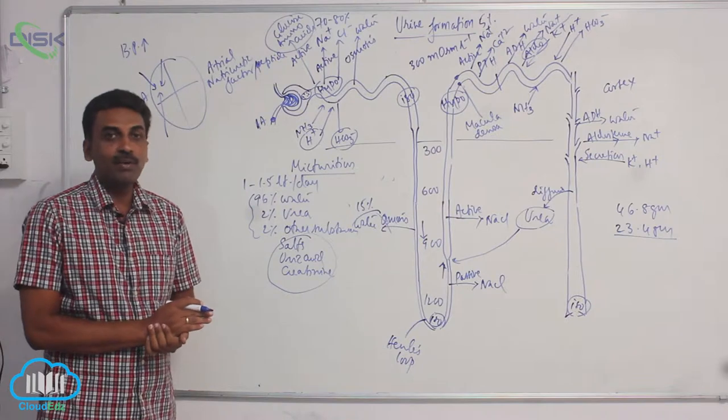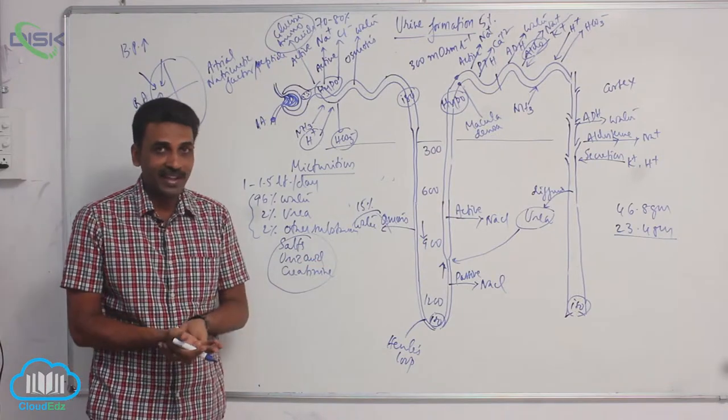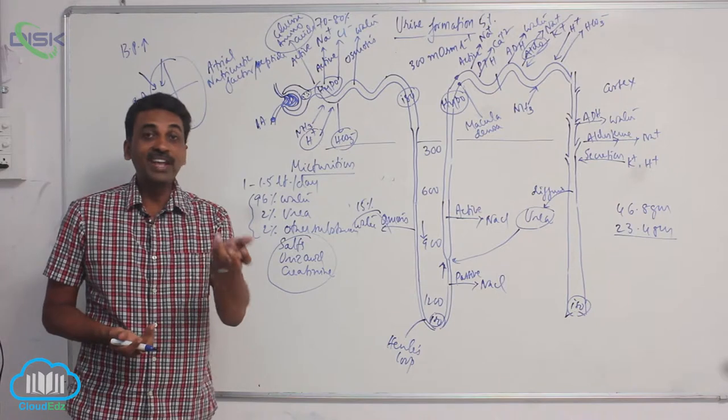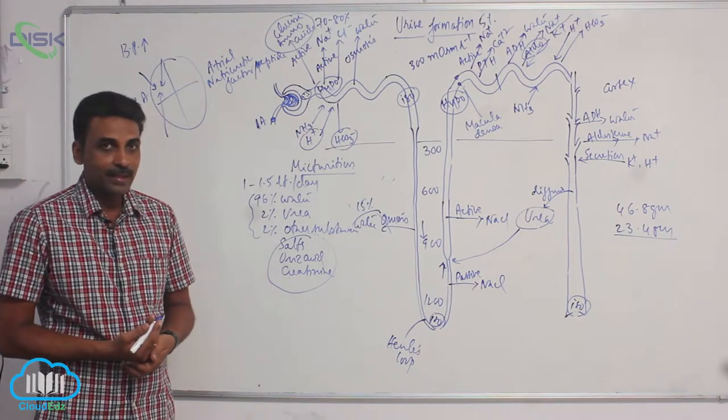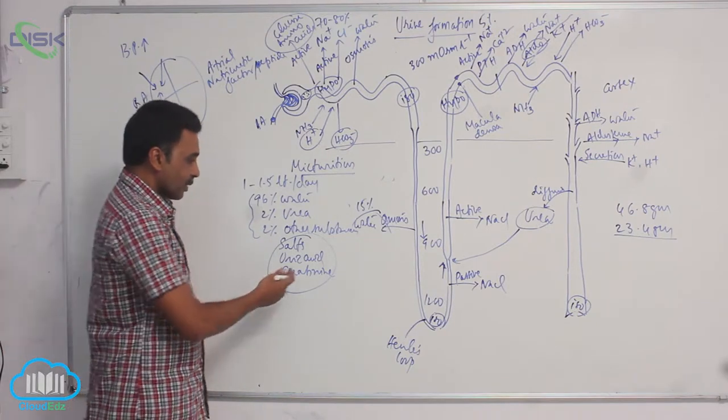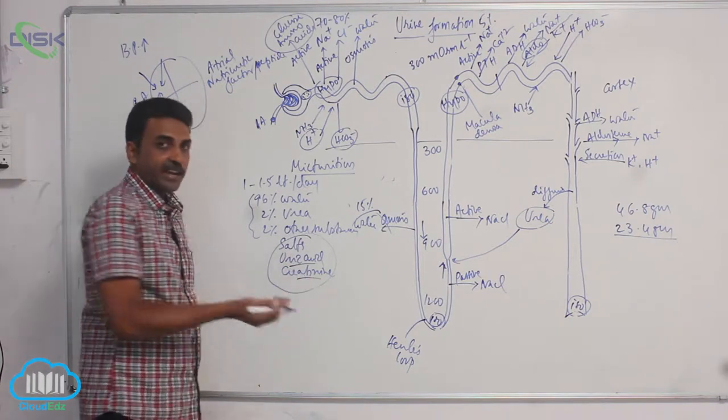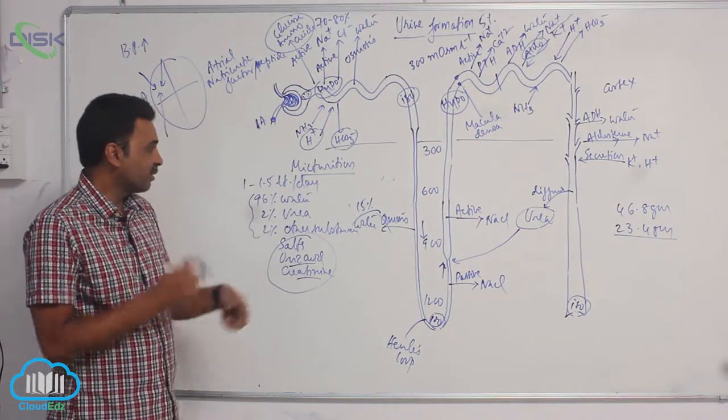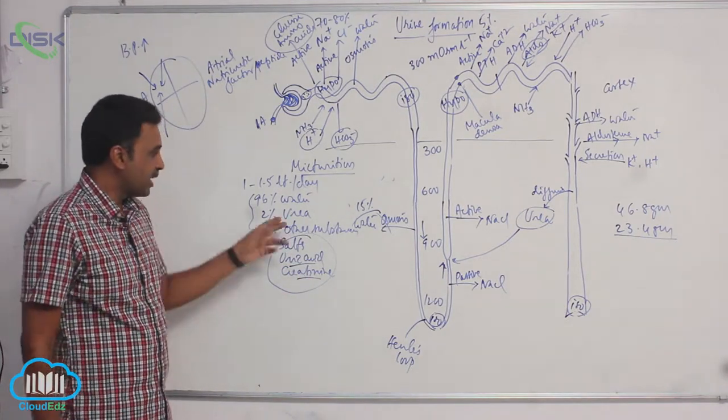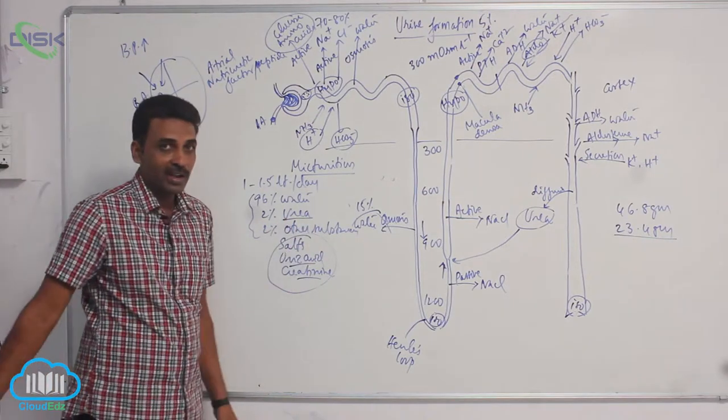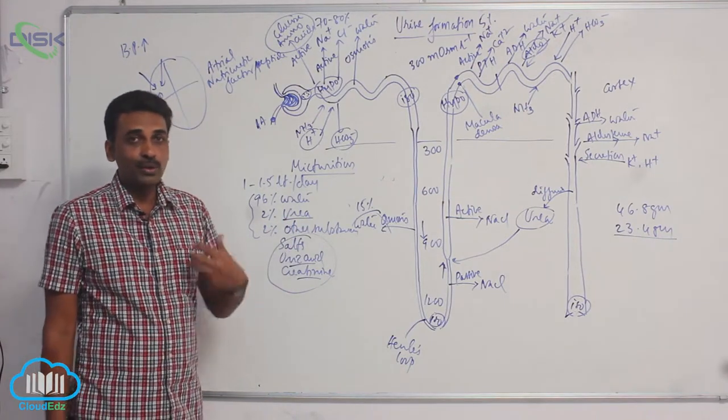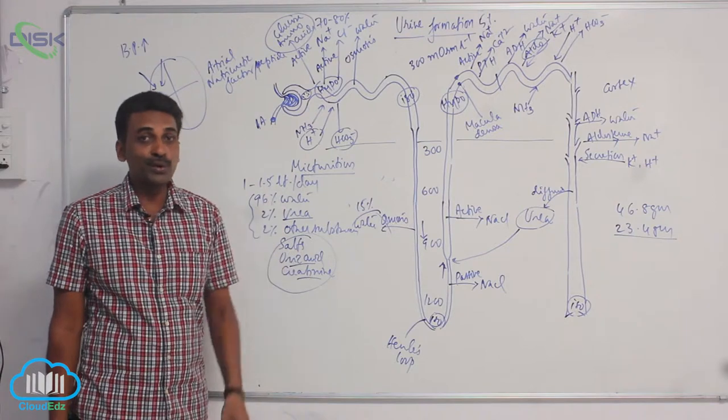Uric acid, one and a half to two grams per day. Creatinine, 1.8 grams per day. Uric acid, creatinine, they are also seen as part of urine. But the major excretive product is urea. That's why human is supposed to be ureotelic animal.